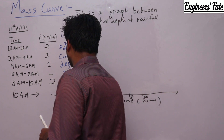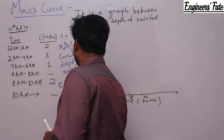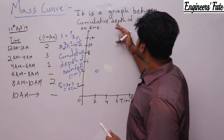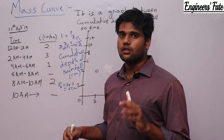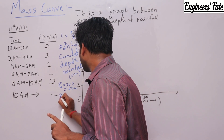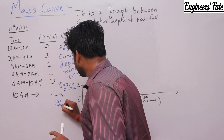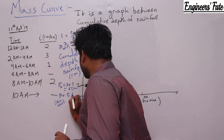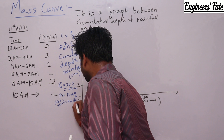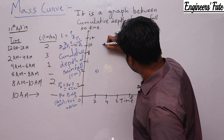For the next interval, intensity is 3 cm/hr and T = 2 hrs, so P2 = 6 cm. Cumulative depth for the first 4 hours is P1 + P2 = 4 + 6 = 10 cm. So the coordinate at 4 hours is 10 cm.